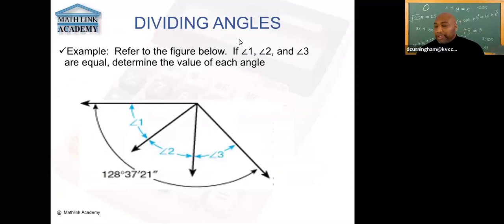Now let's look at this particular problem. This example says angle one, angle two and angle three, which is in light blue. They're all equal. So those are equal angles. And we want to find what they are, given that the total of the three is 128 degrees, 37 minutes, 21 seconds. So in this case, we're going to use division. We're going to divide this number by three. Since we have three angles, equal angles, and that's the key, three equal angles.